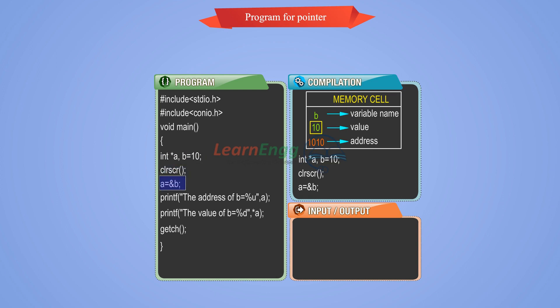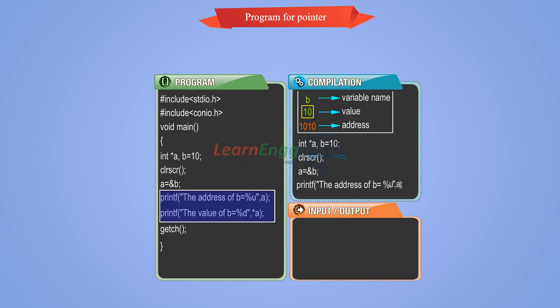Assign A is equal to ampersand B. Ampersand denotes the address of the B value. Printf statement displays the values. The address of A is 1010, because 1010 is the variable B address.